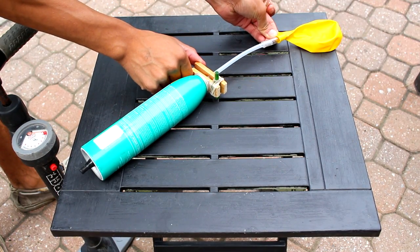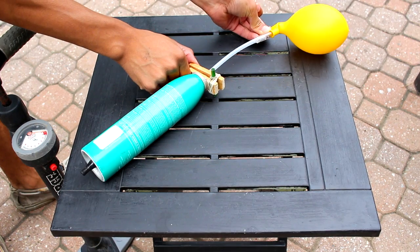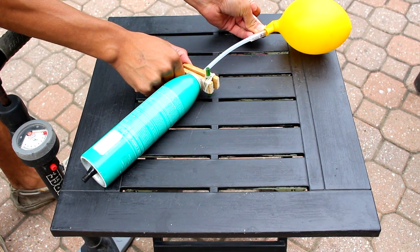To start off this build you'll need this compressed air can from my previous build and as you can see when you pull down the trigger it can inflate a balloon.